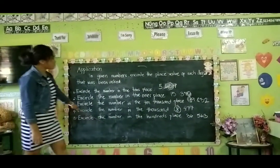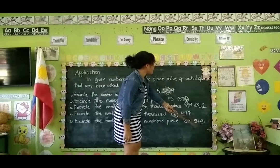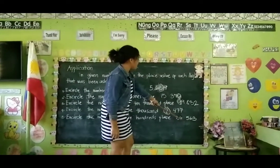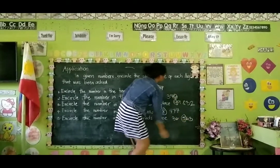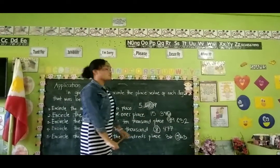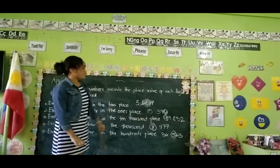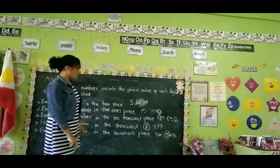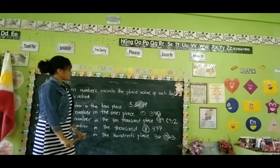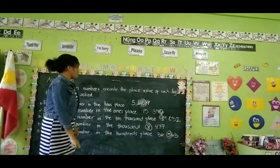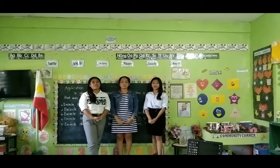And encircle the number in the hundreds place — 36,563. 3 is for ones place, 6 is for tens place, 5 is for hundreds place, 6 is for thousands place, and 3 is for ten thousands place. So, the answer is 5. In summary: in 5,669 the tens place is 6; in 99,832 the ten thousands place is 9; in 8,477 the thousands place is 8; and in 36,563 the hundreds place is 5. Thank you for watching, and we hope that you learned something about the lesson we presented.